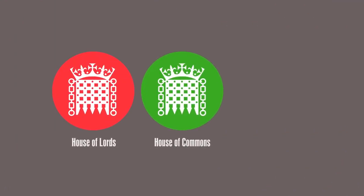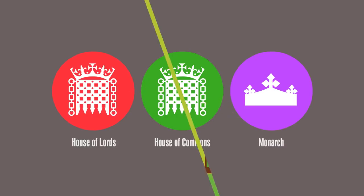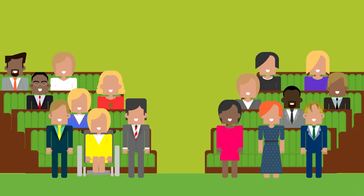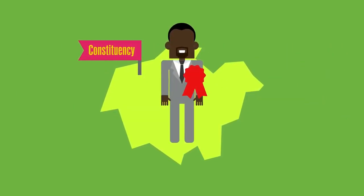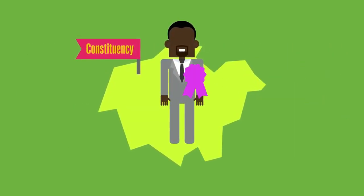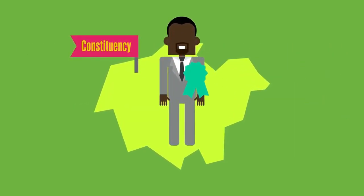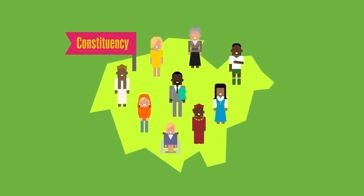Parliament is made up of three parts: the House of Commons, the House of Lords, and the Monarch. The House of Commons is the elected chamber of Parliament. It debates big issues, proposes laws, amends existing ones and challenges the government's work. There are 650 Members of Parliament, or MPs, who each represent a constituency in the UK.